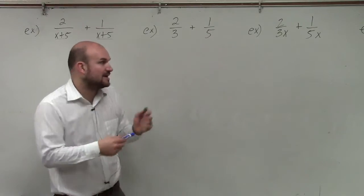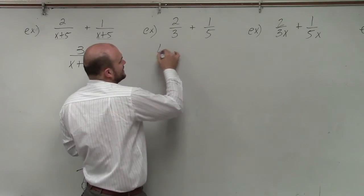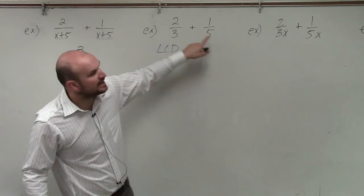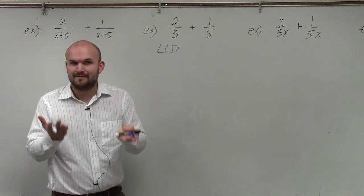So whenever I'm adding and subtracting fractions, I always like to write in the LCD. The LCD is going to be the common denominator that both 3 and 5 divide into, the least common denominator, which in this case will be 15.